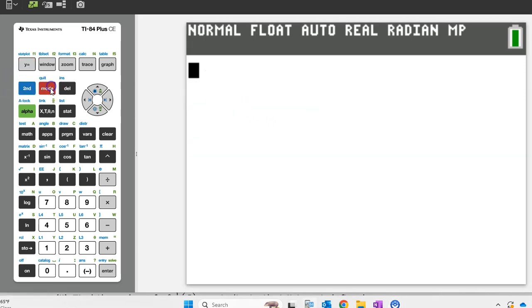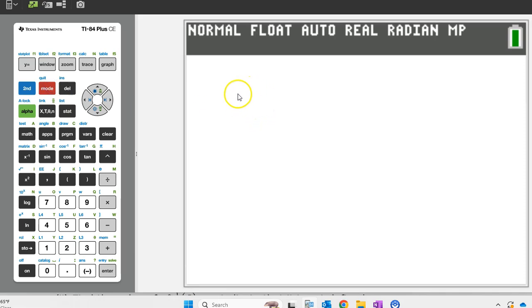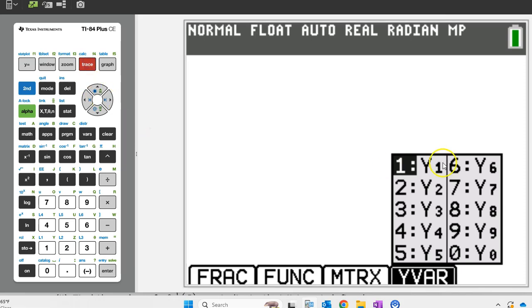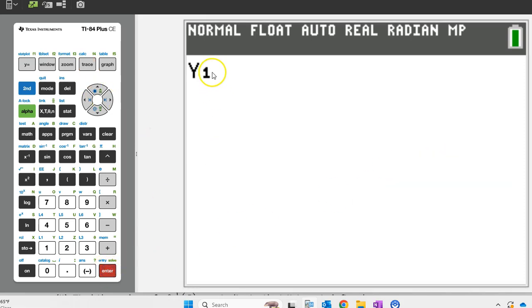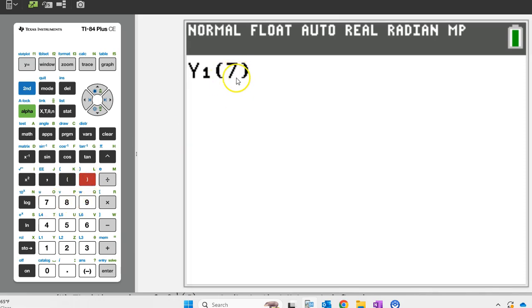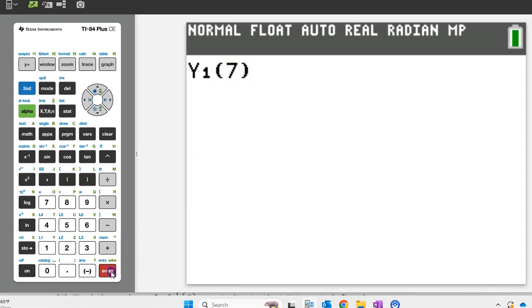Quit your way to a blank screen. To evaluate g at 7, we need to evaluate y1 at 7. You can make y1 show up by hitting alpha, trace, enter. And you can evaluate y1 at 7 by putting 7 in parentheses like this and hitting enter.